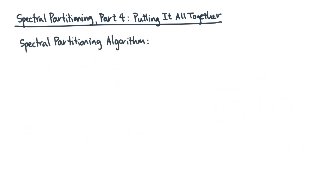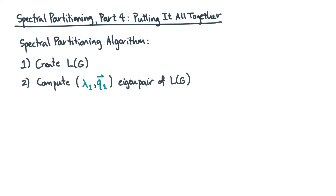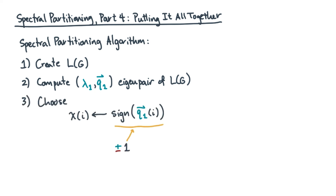So that suggests the following algorithm. First, compute the Laplacian for the graph. Then, compute its second smallest eigenpair. Then, determine the partition using the signs of the components of the eigenvector. That was a lot of work, but the final algorithm is very compact. And indeed, for planar algorithms, it works really, really well.